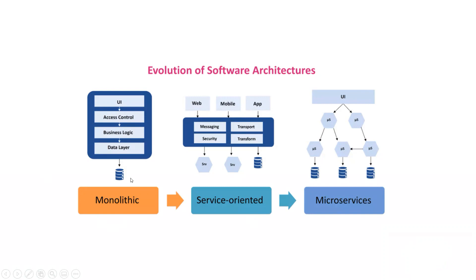In monolithic application implementation, everything is implemented in a single application, single page, and single service. This monolithic architecture works on a single page application layer that brings together all functionalities. It's the simplest form of architecture — having UI, access control, business logic, and a data layer all on a single screen. The request comes from UI, goes through access control, then business logic, then the data layer, and returns to UI.